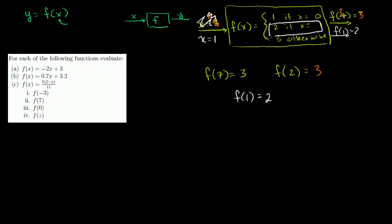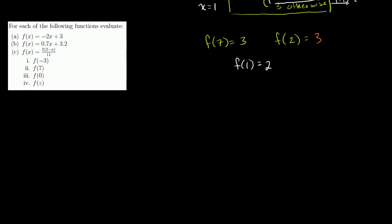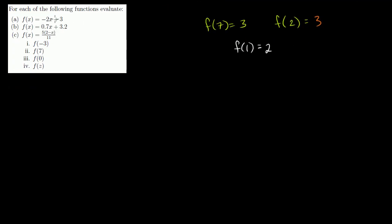Now, with that in mind, let's do some of these example problems. They tell us, for each of the following functions, evaluate these different functions at these different points. So let's do part A first. f of x is equal to negative 2x plus 3.